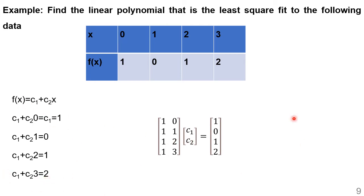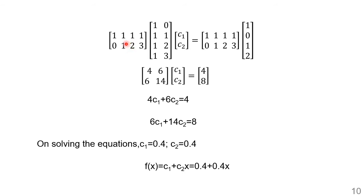We write the matrix A as [[1,0],[1,1],[1,2],[1,3]] and b = [1,0,1,2]ᵀ. Computing AᵀA·x̂ = Aᵀb: AᵀA = [[4,6],[6,14]] and Aᵀb = [4,8], giving the system 4c1+6c2=4 and 6c1+14c2=8.